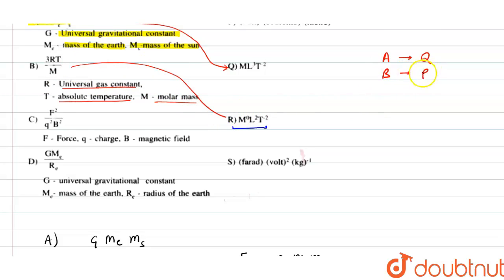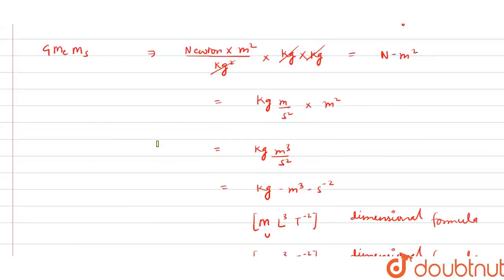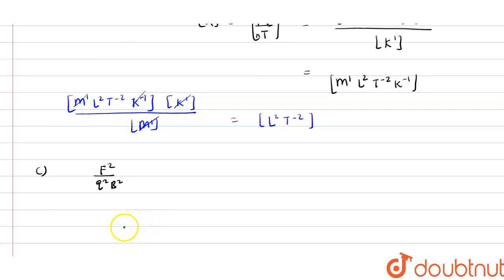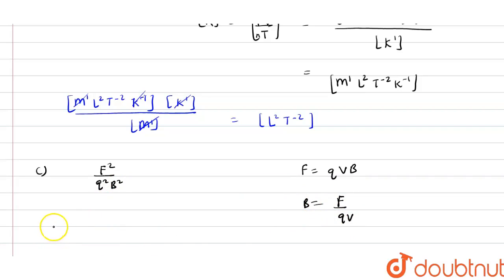Now option C is F²/(q²B²), where F is force, q is charge, and B is magnetic field. We use the relation F = qvB, which gives B = F/(qv).